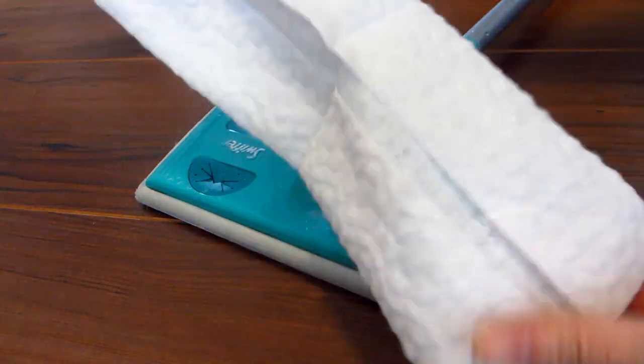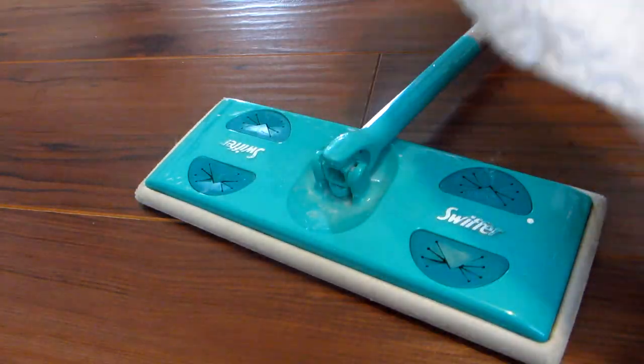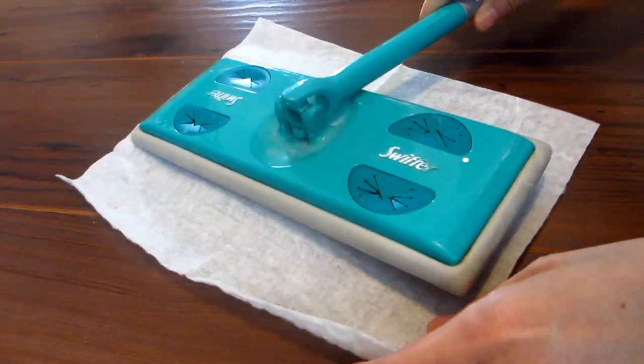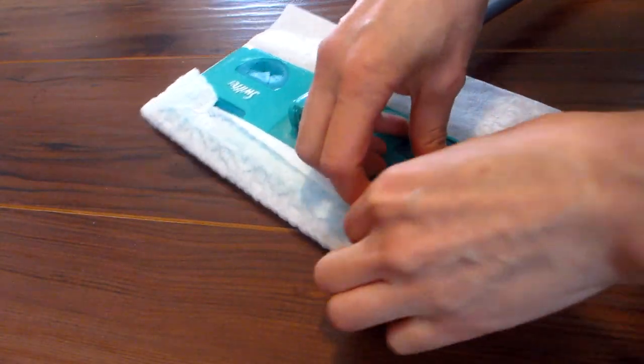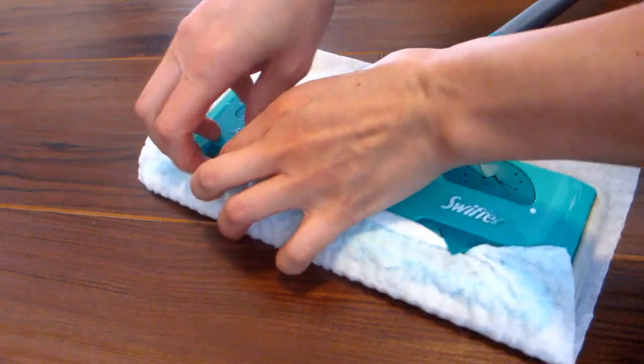The white Swiffer dry sweeping cloths come textured with ridges that help trap dirt, dust, hair, and small crumbs. They are much thicker than regular paper towel and are soft to the touch.